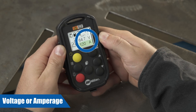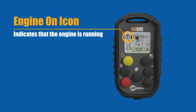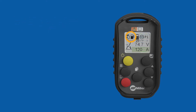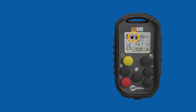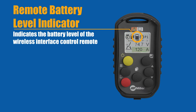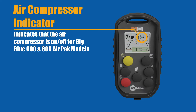Also included on the home screen are several icons which display information regarding your machine status. The engine on icon indicates that the engine is running. The fuel icon indicates the engine's fuel level. The remote battery level indicator shows the battery level of the wireless interface control remote. The air compressor icon indicates that the air compressor is on or off, for Big Blue 600 and 800 Airpack models.